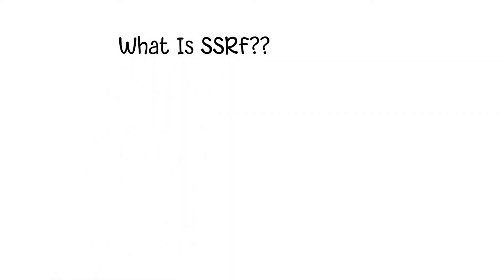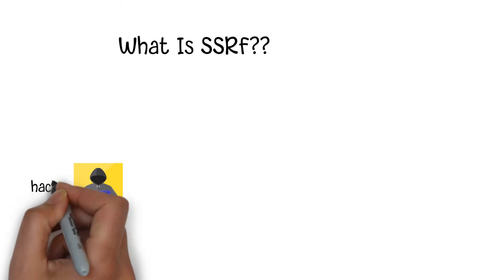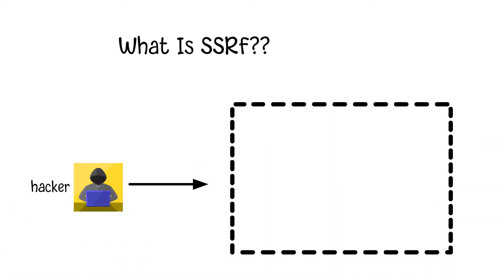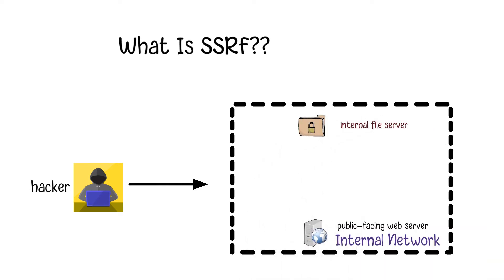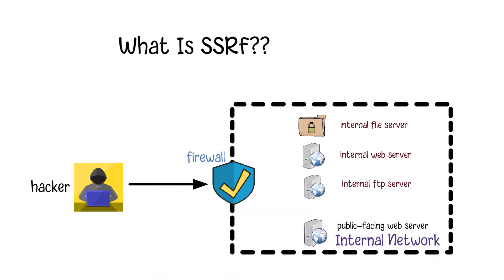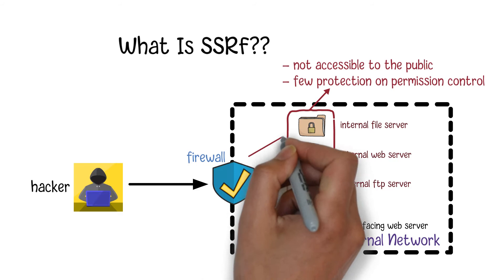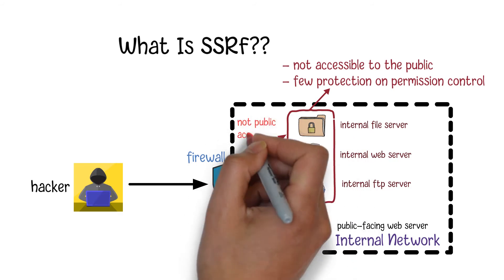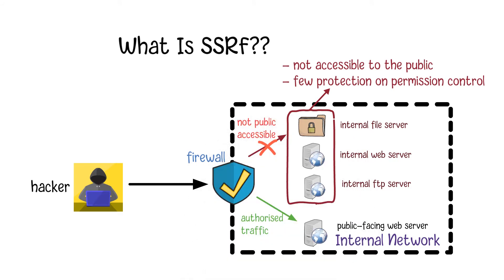SSRF, known as Server-Side Request Forgery, indicates an attack which lets an attacker send deliberately modified requests from a vulnerable web server application. When a client interacts with the web server to get required resources, firewall services protect the server from unauthorized access. However, for internal resources or services not accessible to the public, there is little protection, since the web server is considered a member of the internal network and has permission to access a number of secure services.